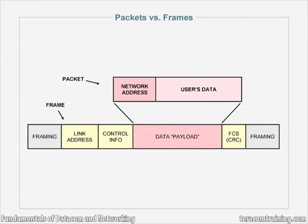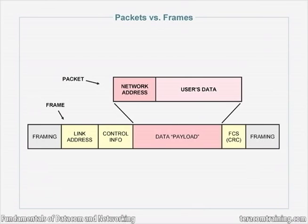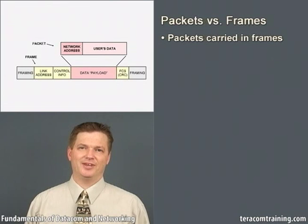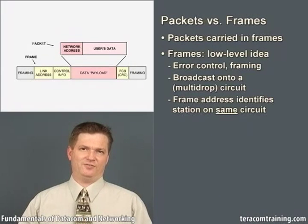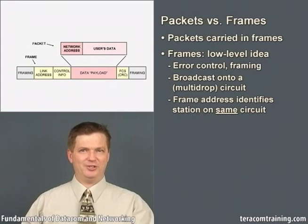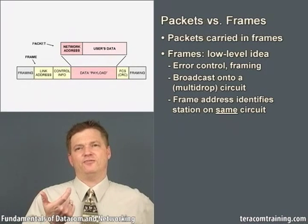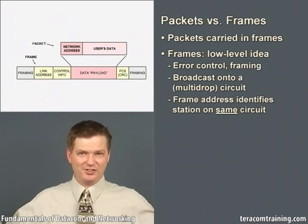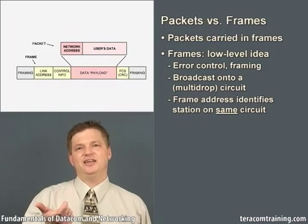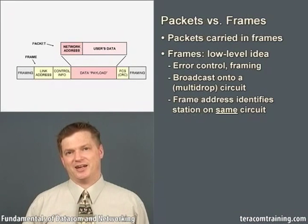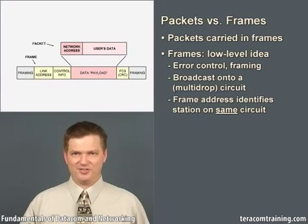There's something strange about this picture: there are two addresses. There's a network address and a link address — an address on the front of the packet, and an address on the front of the frame. Are these the same things? No. Frames are a low-level idea — in fact the lowest-level idea besides just moving bits around — and the information on a frame is only locally meaningful. On a multi-drop circuit with several stations physically connected, the link address indicates which station should react to this data, because everybody's going to hear it.